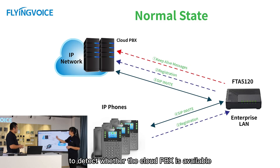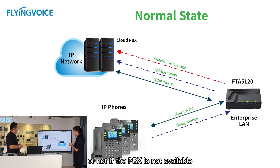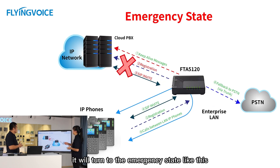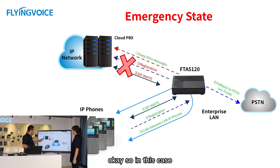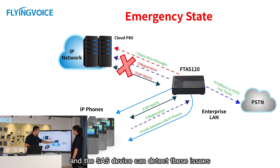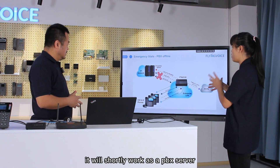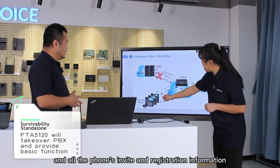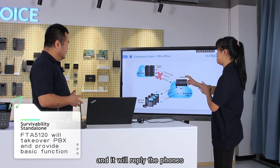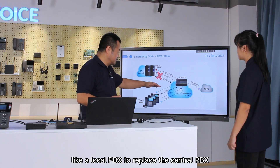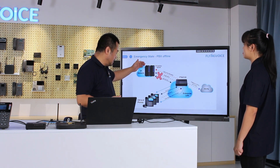The SAS device sends SIP OPTIONS messages to detect whether the Cloud PBX is available. If the connection between the SAS device and the Cloud PBX is down, it turns to emergency state. In this case, it detects the internet issue through the keepalive message and knows the internet is unavailable. The SAS device then takes over, working as a PBX server, and all phones still send registration information to the device and it replies to the phones.